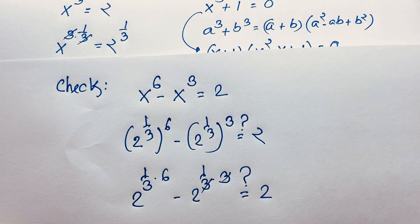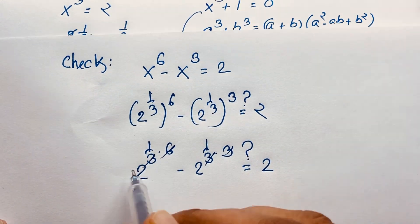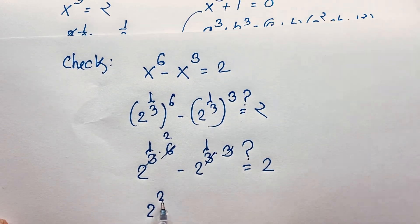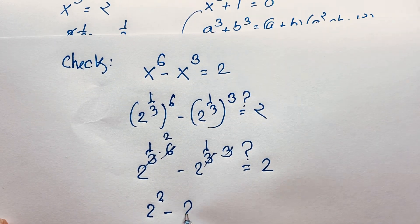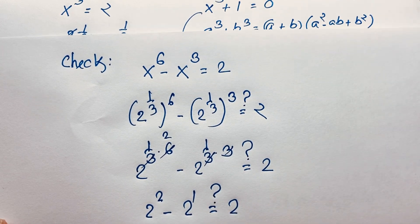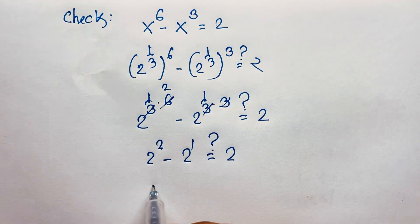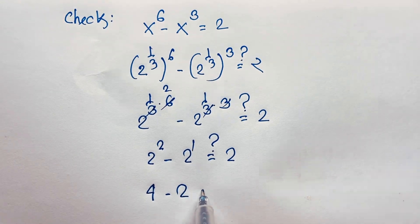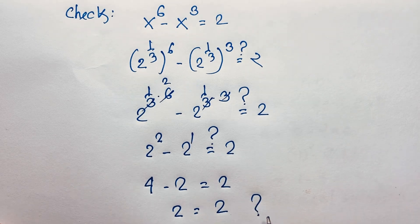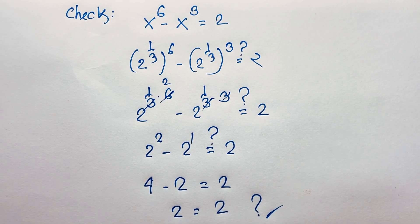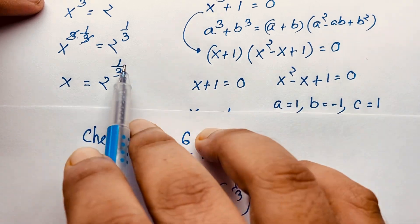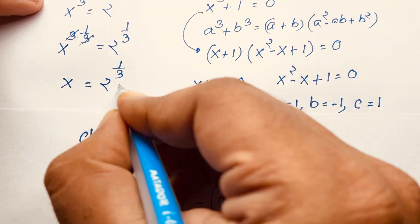Now, the 3 and 3 cancel out, and 6 divided by 3 is 2. So it becomes 2 to the power 2 minus 2 to the power 1 is equal to 2. Here it is 4 minus 2 is equal to 2. So 2 is equal to 2 — left-hand side and right-hand side are equal. So, equivalently, x is equal to 2 to the power 1 over 3. This is our final answer.